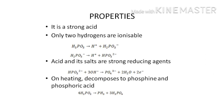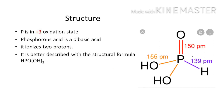Phosphorous acid and its salts (phosphites) are strong reducing agents and are oxidizable to phosphoric acid and phosphates respectively. Phosphorous acid reduces salts of copper, silver, gold, etc. to the respective metals. On heating, phosphorous acid decomposes into phosphine and phosphoric acid. In phosphorous acid, phosphorus is in the +3 oxidation state. It is a dibasic acid, suggesting the presence of two O–H groups; the third hydrogen is non-ionizable.